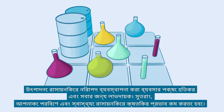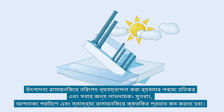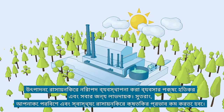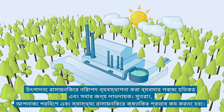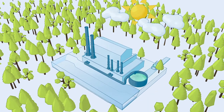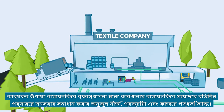Safely managing chemicals in production is good for the business and beneficial for everyone. Therefore, you need to minimize the chemicals' harmful impact on health and environment. Effective chemicals management means that policies, procedures and practices are in place that address the different aspects of the life cycle of chemicals in the factory.